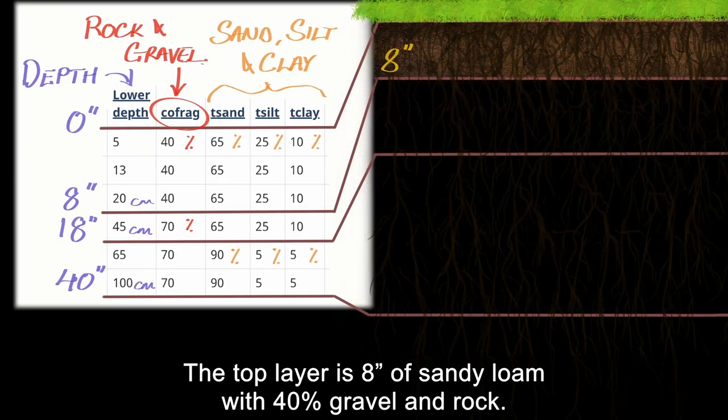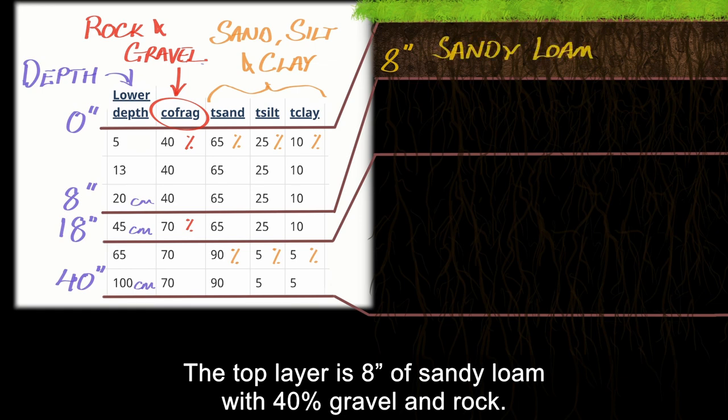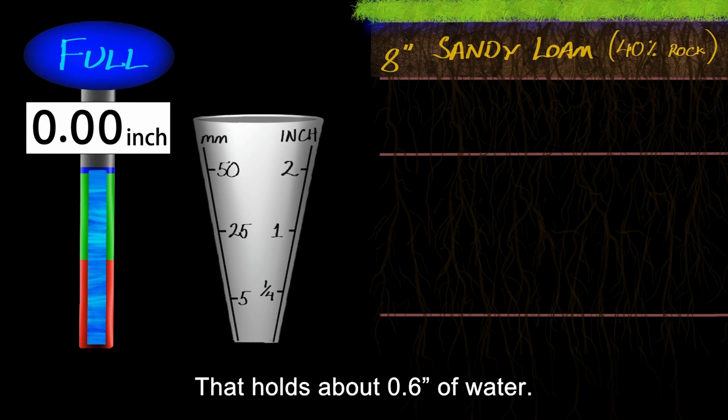The soil survey showed us we have the following layers. The top layer is 8 inches of sandy loam, with 40% gravel and rock. That holds about six tenths of an inch of water.